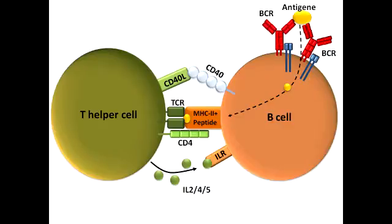What is the defect in Hyper-IgM Syndrome? In Hyper-IgM Syndrome, there is a defective CD40 ligand on helper T-cells. When CD40 ligand is defective, you are not able to complete that second signal of B-cell activation and class switching, therefore no class switch occurs.